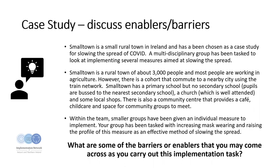Here is an example of a case study used in group sessions. Once you have read through it, consider: what factors could help successfully implement mask wearing in this town? What already exists that could be developed or used to promote the message? What factors could slow down implementation? Think about the barriers and facilitators you have identified. Module 2 will go into further detail on barriers and facilitators.